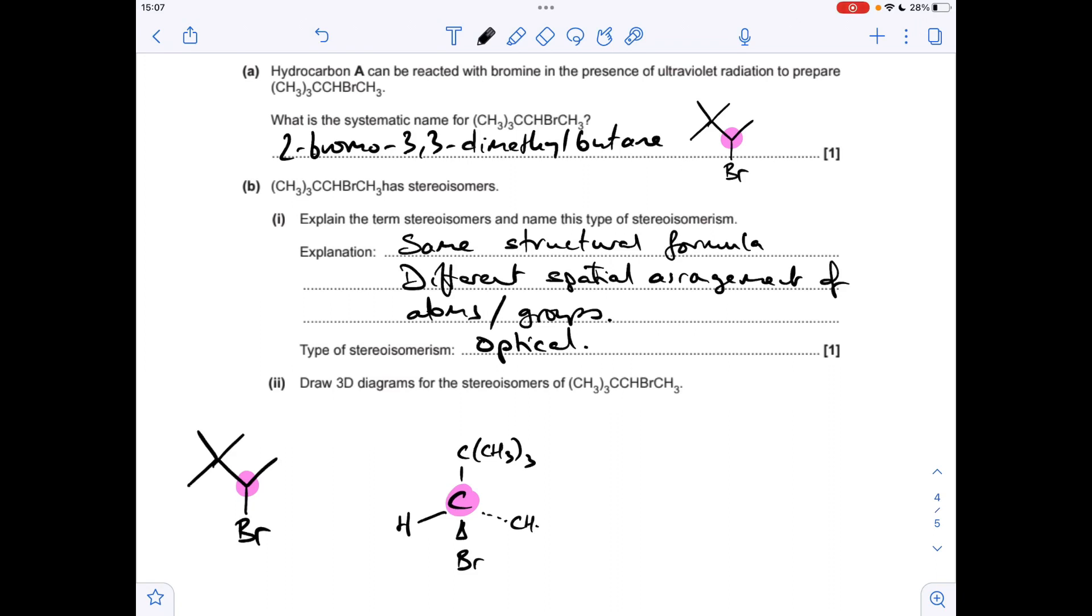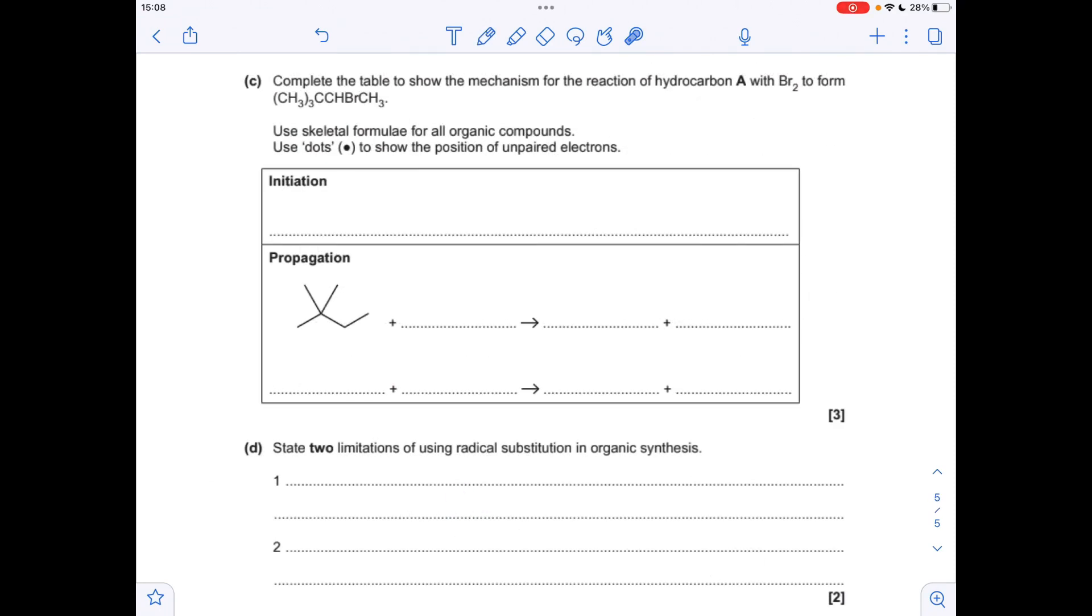For the mirror image, all I need to do now is put the groups on and the correct bonds. At the top here I've got the three methyls on the carbon. On the dotted line I've got a CH₃ - just be careful with your connectivity. The bromine on the wedge, I've got the hydrogen on the solid line.